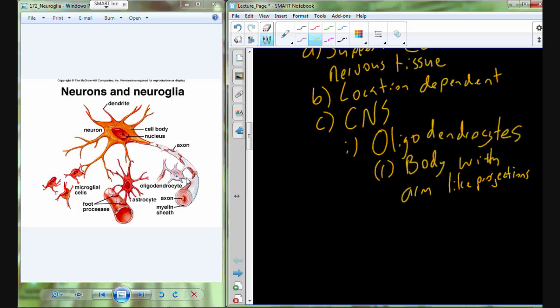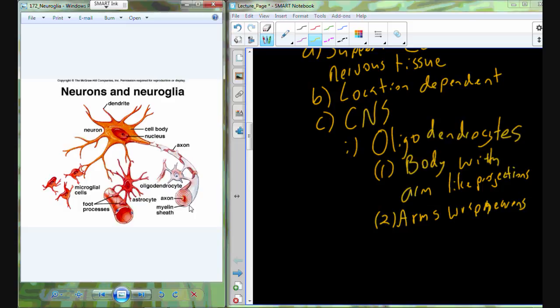These arms, as they extend out, they're extensions of the cell membrane, and they're going to wrap around the neurons, which this is what you can see occurring here. So those extensions of the membrane, they wrap around many times, so you get this sheath or this rolling around the neuron.